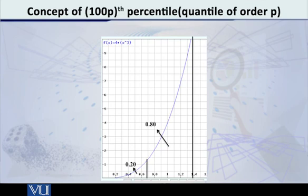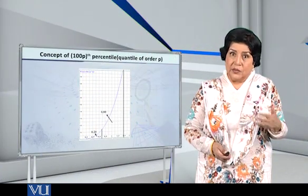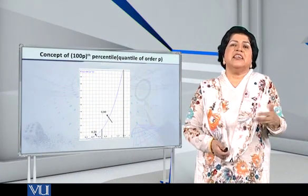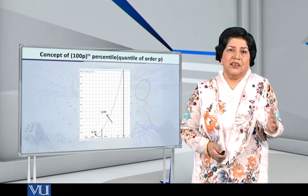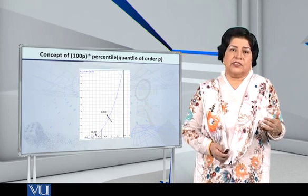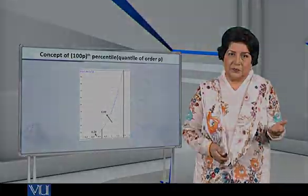And the remaining area, the area which is beyond that percentile, that is obviously 0.80. So, this is the mechanism for finding any percentile of a continuous random variable. Thank you.